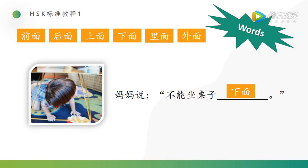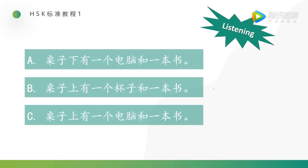I want to emphasize once again: in Chinese, the location word should be put after the noun. It's different from English — we cannot put it before the noun. 桌子下面 — see, 下面 should be put after 桌子.